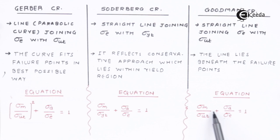When a problem of fluctuating load is given and we are supposed to use any of these criteria, we need to apply their logic. The appropriate equation will then be used to find the unknown stresses at a particular point.